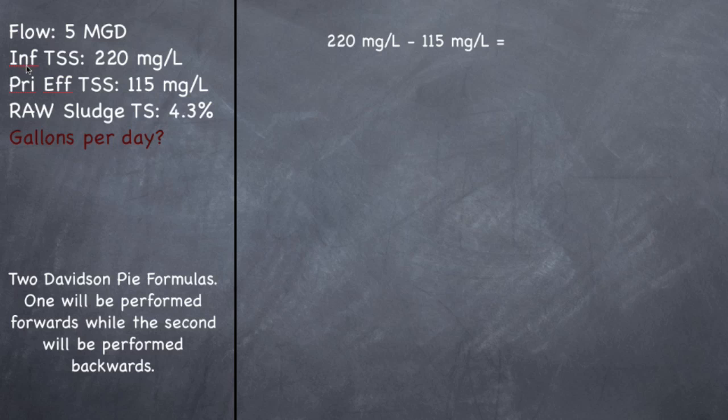Okay, so if I have an influent TSS of 220, so what's coming in, and a primary effluent TSS, what's leaving my primary clarifier of 115, how much stayed in the primary clarifier? How much settled out to the bottom of my clarifier? So I've got 220 going in and 115 coming out. So if I subtract those two, that means 105 milligrams per liter are settling out into my clarifier. So that's the concentration I'm going to use to figure out how many pounds are settling out into my clarifier.